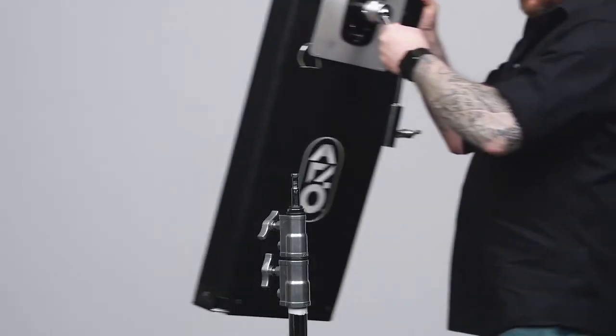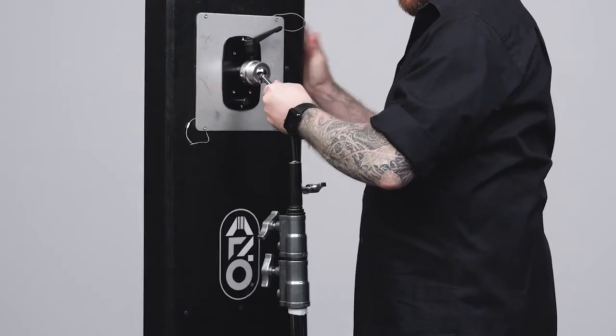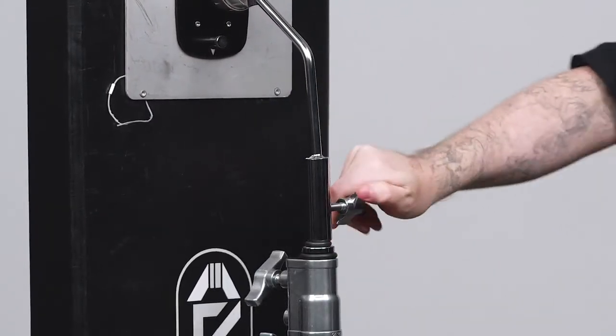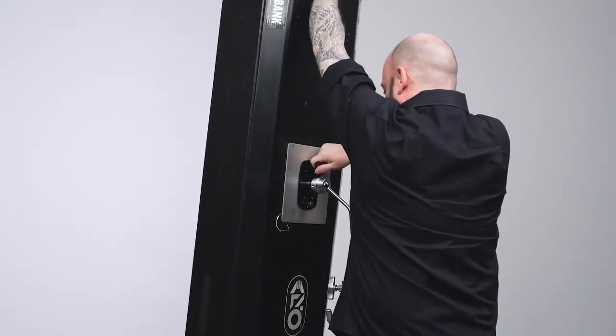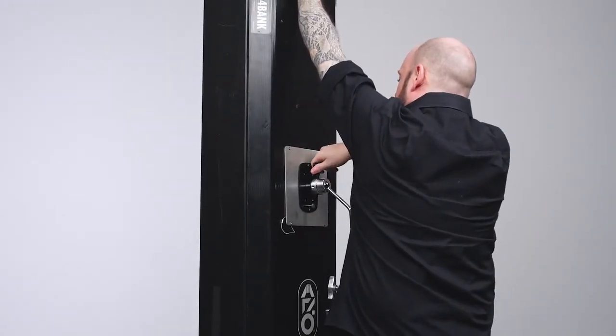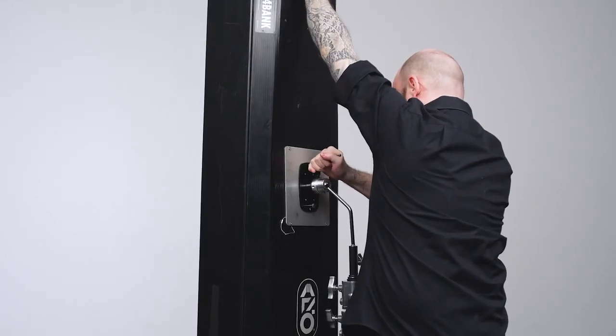Slide the baby receiver onto the C-stand top pin and turn the knob clockwise to secure in place. With one hand supporting the light fixture, loosen the offset swivel adapter's handle, make final position adjustment, and tighten.